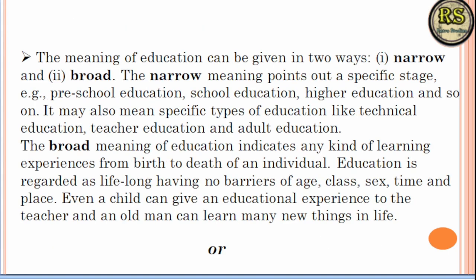Education is divided into two parts: narrow and broad. The narrow meaning refers to formal education — pre-school, primary, and higher education — where we learn things in a structured, specific area. In the broader meaning, we learn things at all times while living in society. There is no barrier of age, class, time, or place.